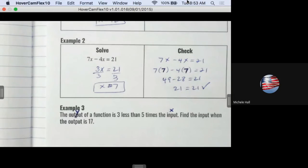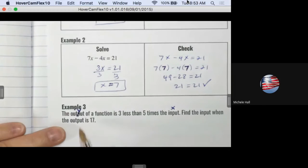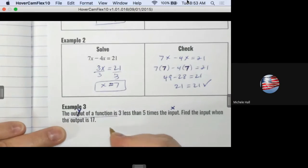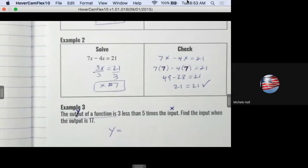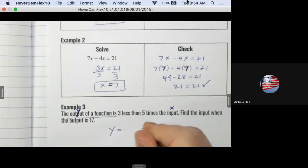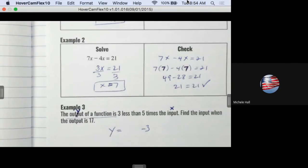So it says the output of a function is - what does that mean? The output of a function is Y equals. 'Is' means equal. So Y equals three less than five times the input. Three less than, yes, and then five times the input - there we go. There's the first part. It says find the input when the output is 17. Don't erase it because I would need to make sure that you can actually write that. And then put 17 equals and solve.